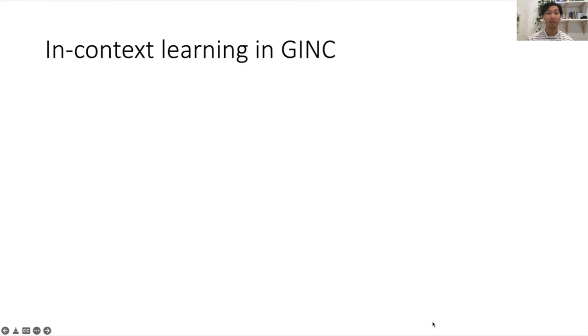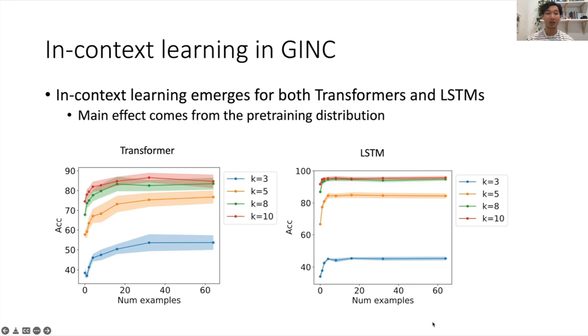So we find in GINC, when we pre-train on GINC documents, in-context learning emerges for both transformers and LSTM architectures, meaning that the result is architecture-independent and that the main effect comes from the pre-training distribution.